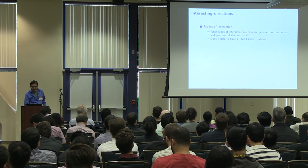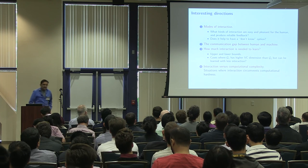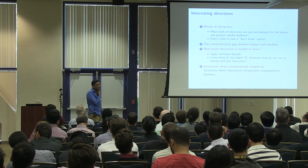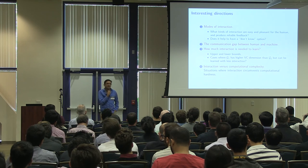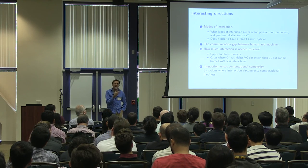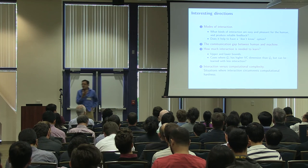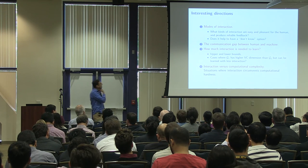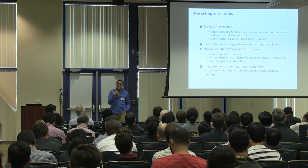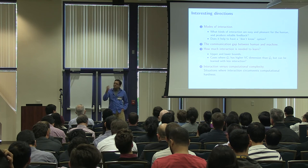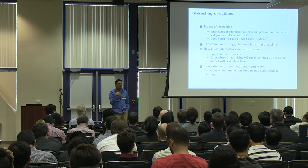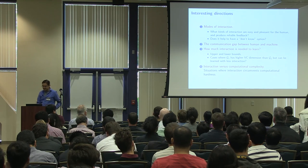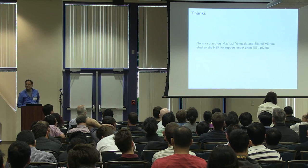I'll end with a few open problems. The most interesting are: first, to explore modes of interaction — what kinds of interaction are convenient for a human and lead to reliable feedback? This is not outside the realm of theory. Second, there's the communication gap: once you're doing interactive stuff, you want the human to explain things to the computer and vice versa, but they have completely different representations, so there's a communication gap that has to be bridged. Thank you very much.